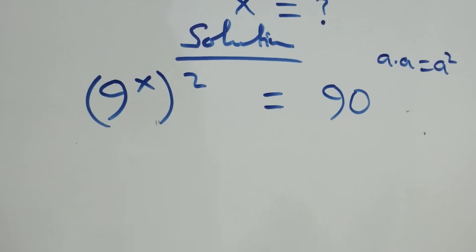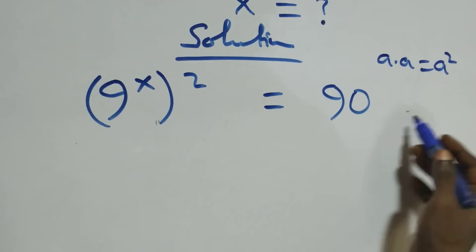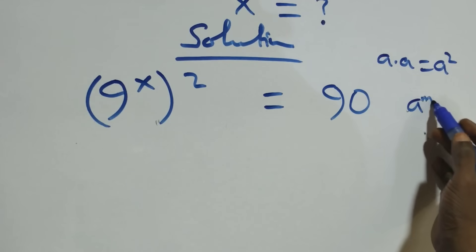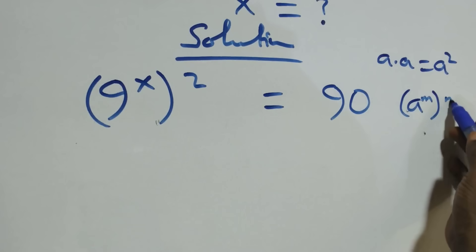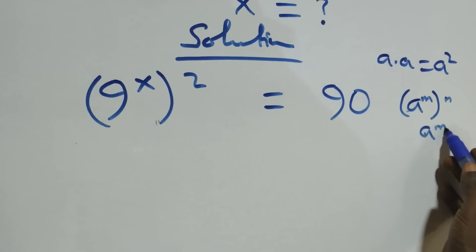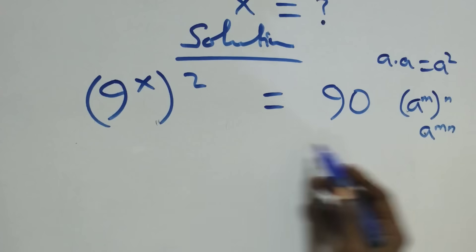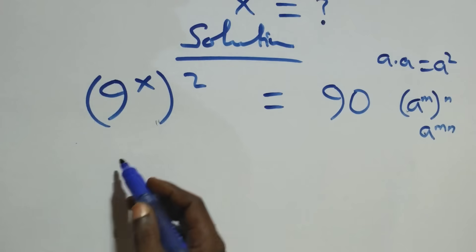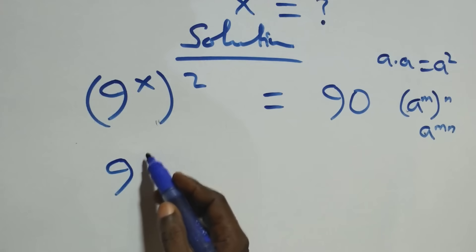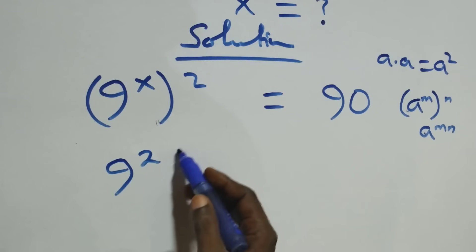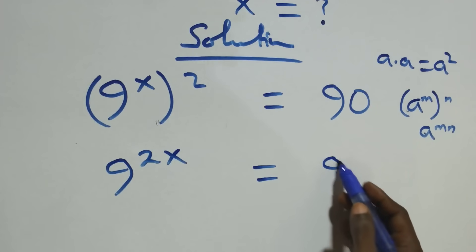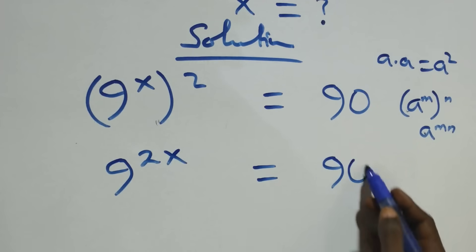This follows when we have A raised to power m, raised to power m — the same thing as A raised to power m. That is, the powers multiply, and we have 9 raised to power 2x equals 90.